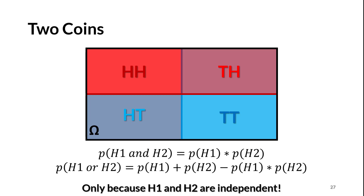Rearranging the diagram, the four outcomes from two coin flips are clear. The upper left is HH, the upper right is TH, and so on. The four flips create a partition of the sample space. For both coins, heads and tails are equiprobable, so the width of the rectangles — from the probability of heads or tails on the first flip — is one-half. The height works the same way from the second flip. This means the area of all four outcomes is one-quarter. Plugging back in, the probability of getting heads on either coin is 0.5 + 0.5 − 0.25 = 0.75.